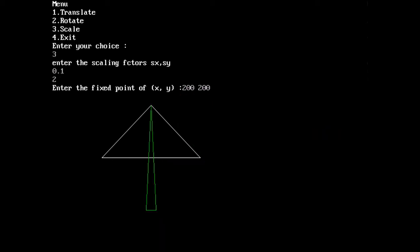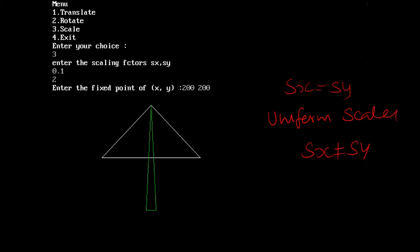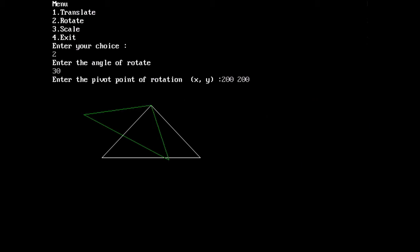It is not necessary that sx and sy have the same value. If sx equals sy we call it uniform scaling. If sx is not equal to sy we call it differential scaling. For example, reducing x size while increasing y size produces a different shape. Here the fixed point is 200,200.